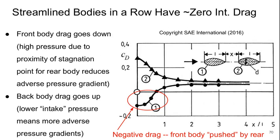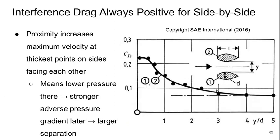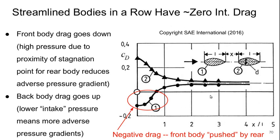So next let's consider the case of two streamlined bodies in a row. What's really interesting here is that this is the drag for either of the bodies, one or two, not both together. For the streamlined bodies in a row, we can look at the drag of the two bodies and the interference drag here tends to be just about zero.